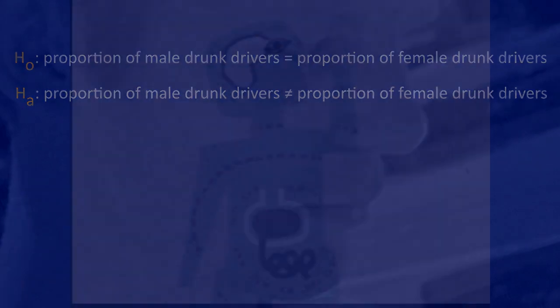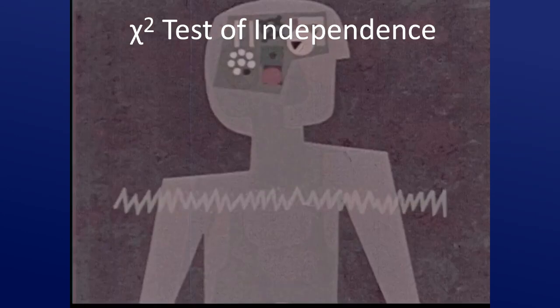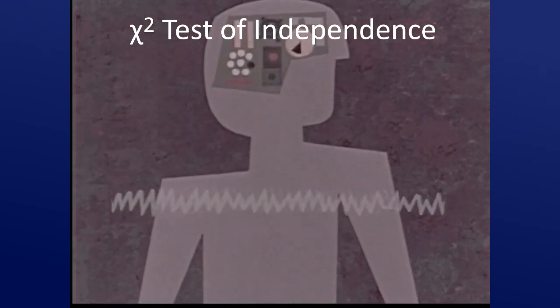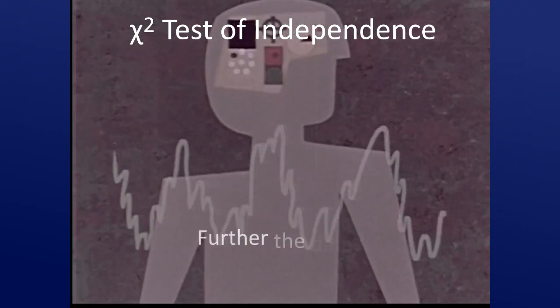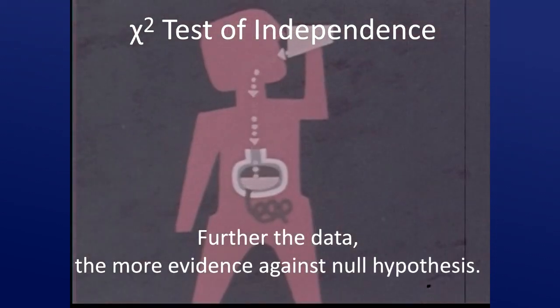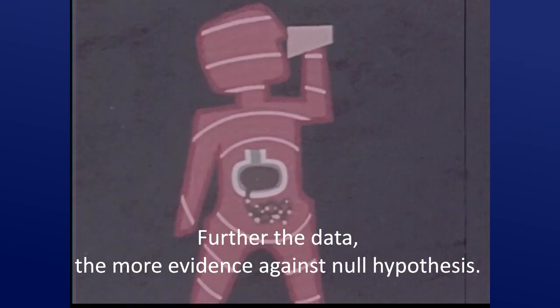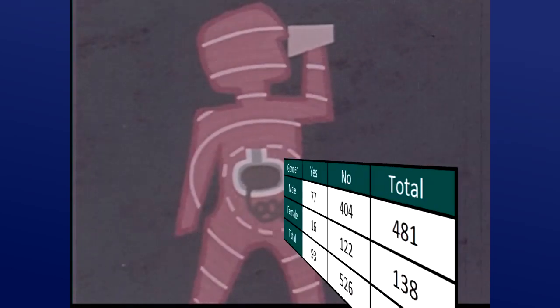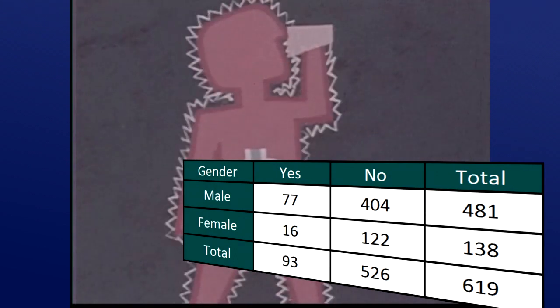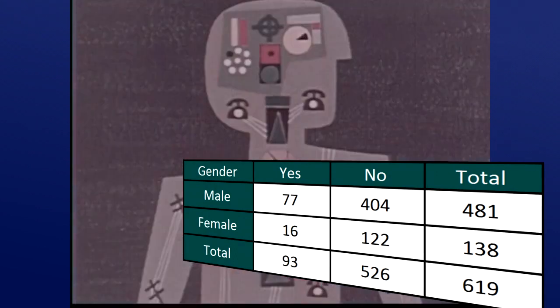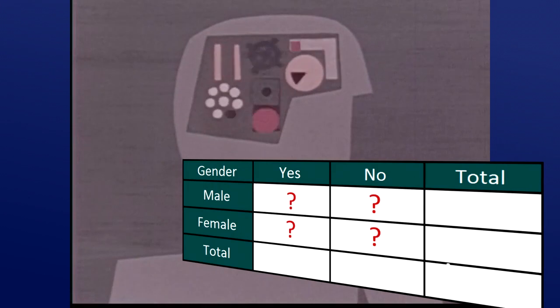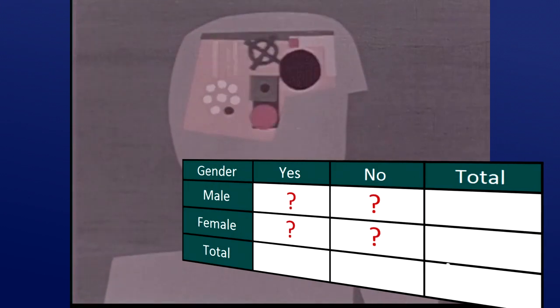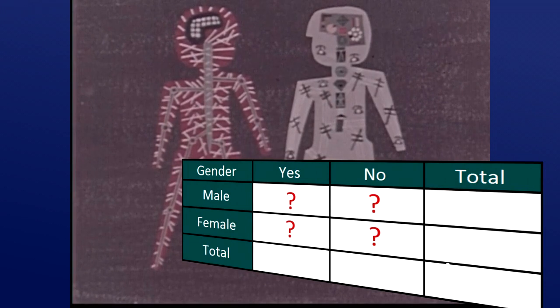The idea behind the chi-square test of independence, much like the analysis of variance, is to measure how far the data are from what is claimed in the null hypothesis. The further the data are from the null hypothesis, the more evidence the data presents against it. Here, the gender and drunk driving data are represented by the observed counts. To represent the null hypothesis, we're going to calculate another set of counts, the counts that we would expect to see instead of the observed ones if drunk driving and gender were really independent, that is, if the null hypothesis were true.